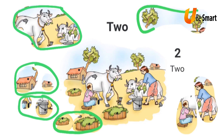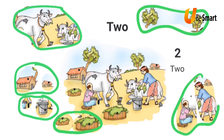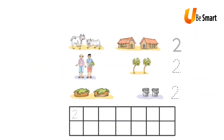I also see two trees and two men. Now I trace the number 2 along these dotted lines, and I write the number 2 in each of the boxes below.